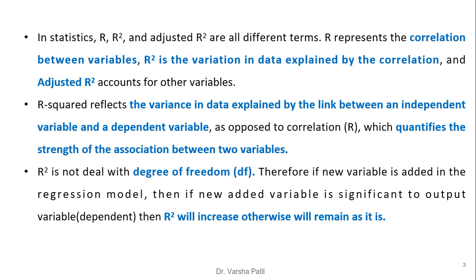R-square reflects the variance in data explained by the link between the independent variable and dependent variable, as opposed to correlation R, which quantifies the strength and the association between the two variables.